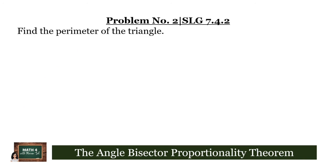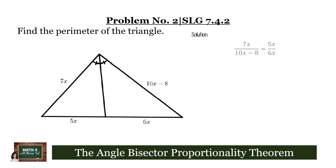Let us now apply the angle bisector proportionality theorem to solve problem number 2 on your SLG 7.4.2. In this particular problem, we are asked to find the perimeter of the given triangle with sides 7x, 10x-8, and with another side which is divided into segments 5x and 6x by the angle bisector. By applying the angle bisector proportionality theorem, we can form the proportion 7x over 10x minus 8 equals 5x over 6x.